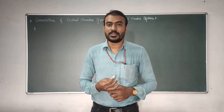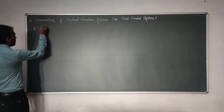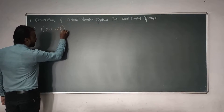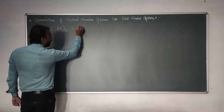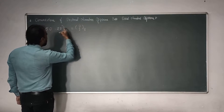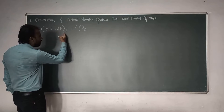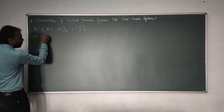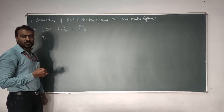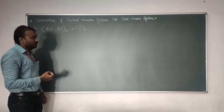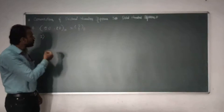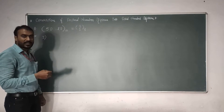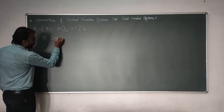Let us see an example of conversion of decimal number into octal number. The first example is 50.20, which is a decimal number base 10, and we are going to convert it into octal. Whenever we convert a decimal number into binary, octal, or hexadecimal, we solve the example in two parts — the integer part and the fractional part. First we are going to solve for the integer part.